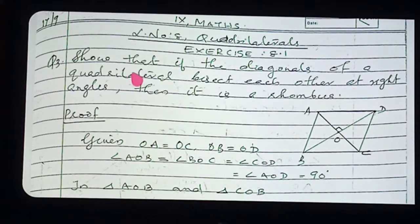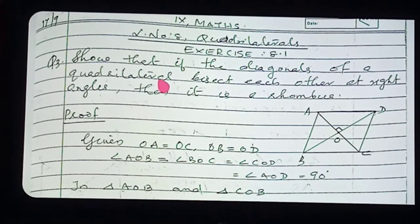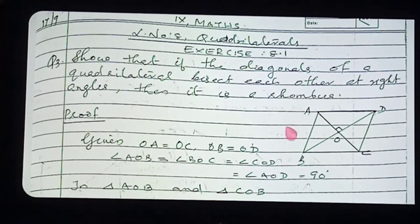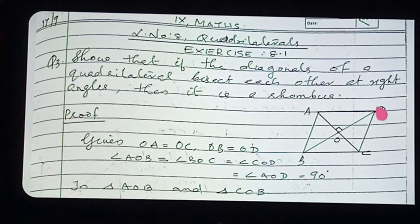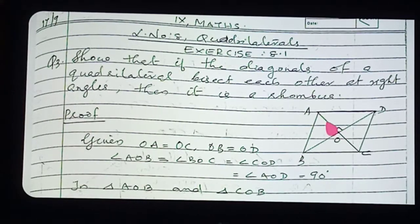Show that if the diagonals of a quadrilateral bisect each other at right angles, then we have to prove that it is a rhombus. AC is one diagonal and BD is the other diagonal. Diagonals AC and BD are bisecting each other at right angles. Then we have to prove that this quadrilateral ABCD is a rhombus.